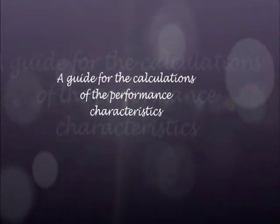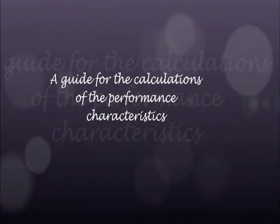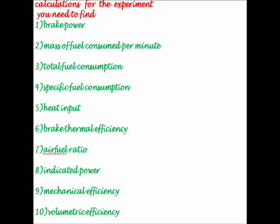A guide for calculating performance characteristics is presented. The parameters include: brake power, mass of fuel consumption per minute, total fuel consumption, specific fuel consumption, heat input, brake thermal efficiency, air-fuel ratio, indicated power, mechanical efficiency, and volumetric efficiency.